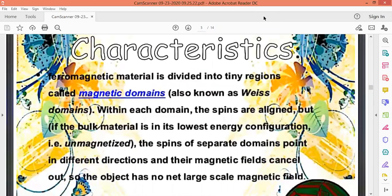Now, the characteristics. Ferromagnetic material is divided into tiny regions called magnetic domains, also known as Weiss domains. Within each domain, the spins are aligned. Now remember that the ferromagnetic material is basically where the electrons follow each other's spin, each other's direction. Then they possess strong ferromagnetic properties.